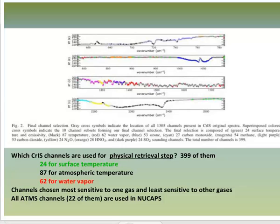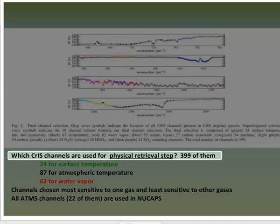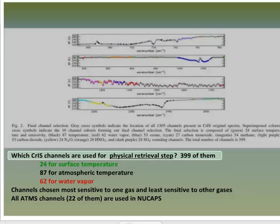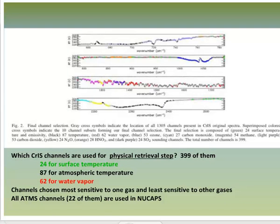When a set of soundings is being produced, regression is done first with all NuCAPS data to get temperature and moisture profiles. These data are used to do cloud clearing. Then the physical retrievals are done sequentially, using a subset of 399 of more than 1300 CrIS channels as shown on this chart. The physical retrieval algorithm sequentially solves for temperature, moisture, ozone, and other trace gases.